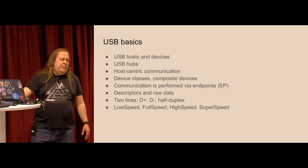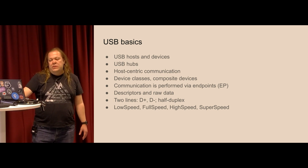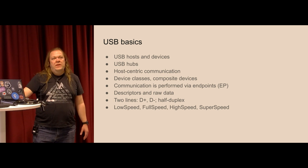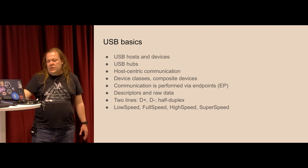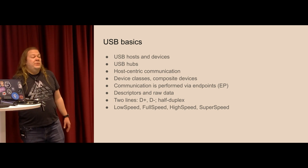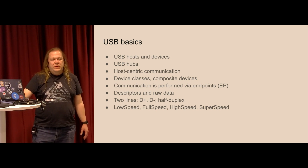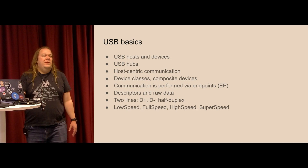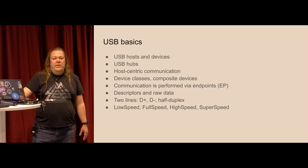On the physical level, USB is just two lines — at least up to high speed — D+ and D−, half-duplex, which means you cannot send and receive at the same time. The overall bandwidth is divided between in and out transactions. We have different speed grades: low speed, which is extremely uncommon nowadays; full speed, which is most microcontrollers that support USB; and high speed devices like flash drives or Ethernet adapters, and some high-capacity microcontrollers.